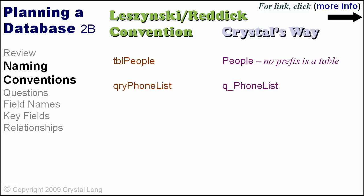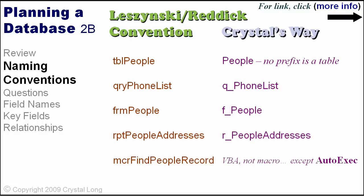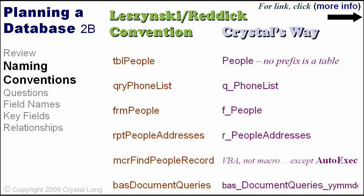The Leszczynski-Reddick convention uses QRY to denote a query; I use Q underscore. Leszczynski-Reddick uses FRM to specify a form; I use F underscore. Leszczynski-Reddick uses RPT for reports; I use R underscore. Leszczynski-Reddick uses MCR for macros — I don't normally use macros, except an auto-exec macro which automatically executes when the database is opened. Leszczynski-Reddick uses BAS for modules; I do that too.